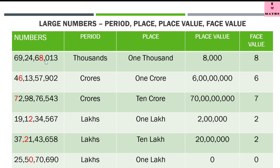Obviously, the answer is 0. You can see here — 0 is at hundreds place, but 0 hundreds means 0, so the place value is 0 and the face value is also 0. Same is true for this 0: the period is thousands, the place is 1000, the place value is 0 thousands which means 0, and the face value is also 0. So the digit whose place value and face value always remain the same, wherever it is placed, is 0.